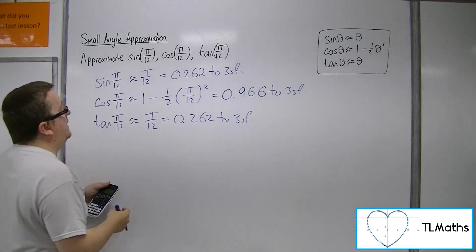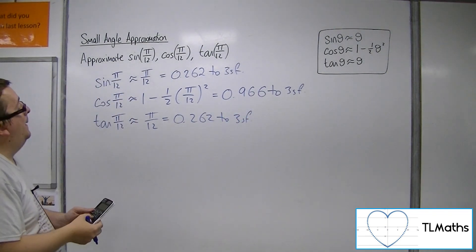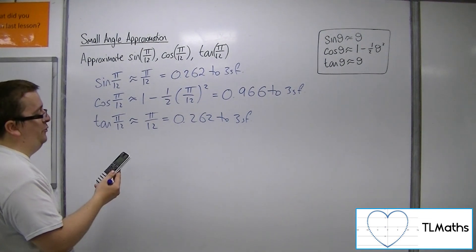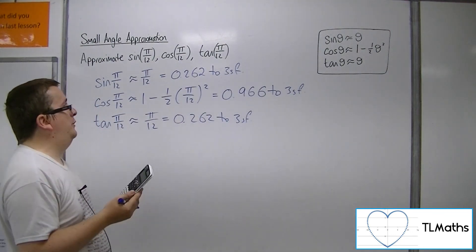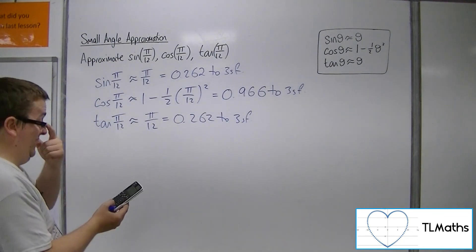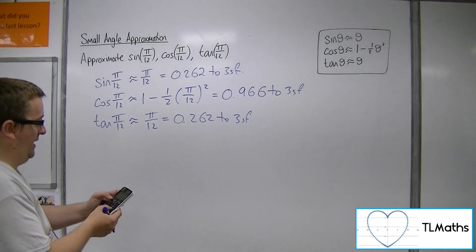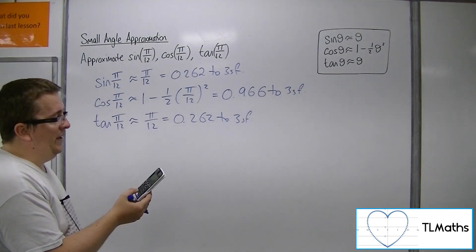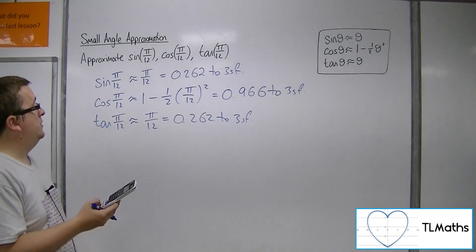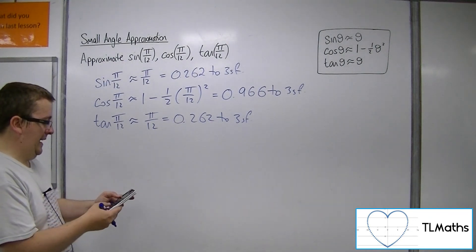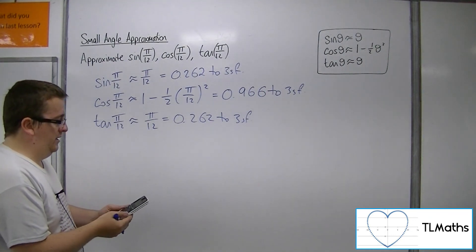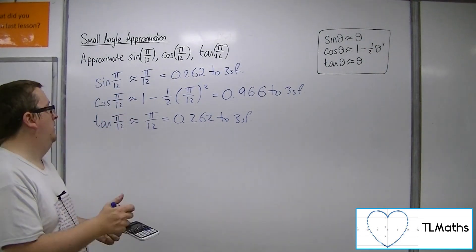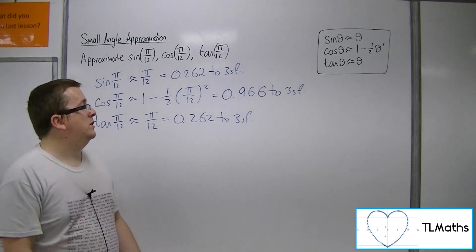OK, and then do a quick check on your calculator. So sine of π/12, I get 0.259, which is close to the 0.262. Tan, sorry, cos of π/12 is 0.966, which is very close to the approximation. And tan of π/12 is 0.268, which is reasonably close to my 0.262 that I got there.